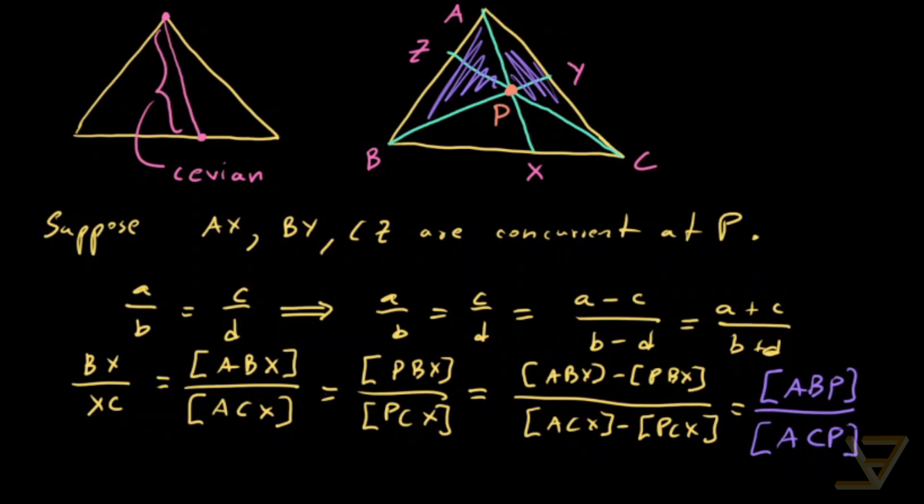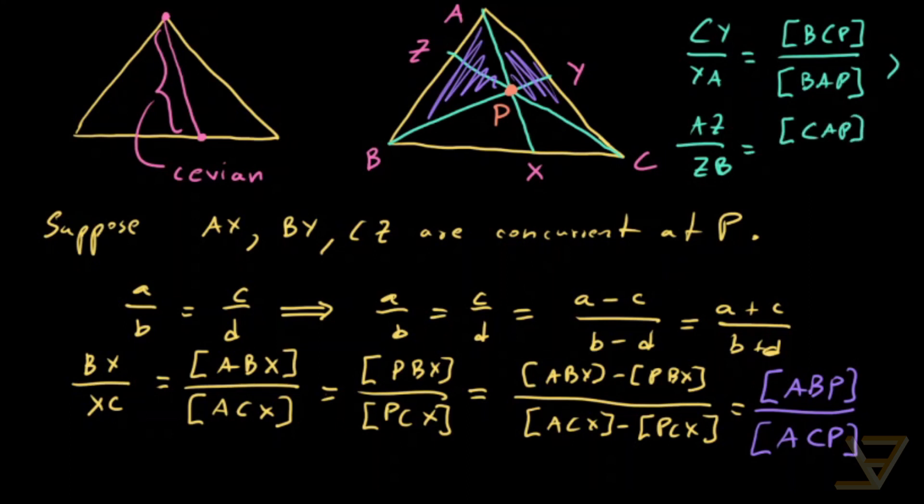And we can make analogous equations. So what we get then is that CY over YA is equal to the area of BCP divided by the area of BAP. And we also find that analogously AZ over ZB is equal to the area of CAP divided by the area of CBP.